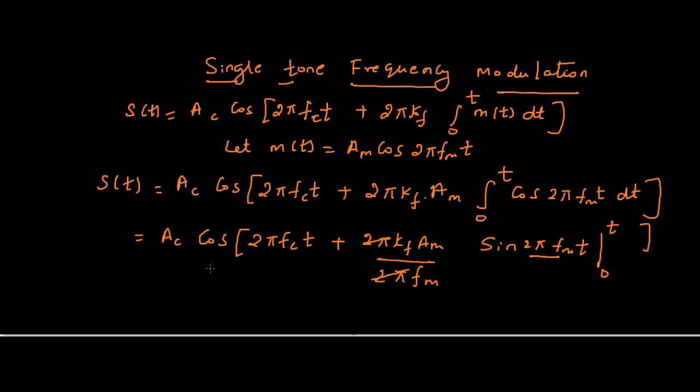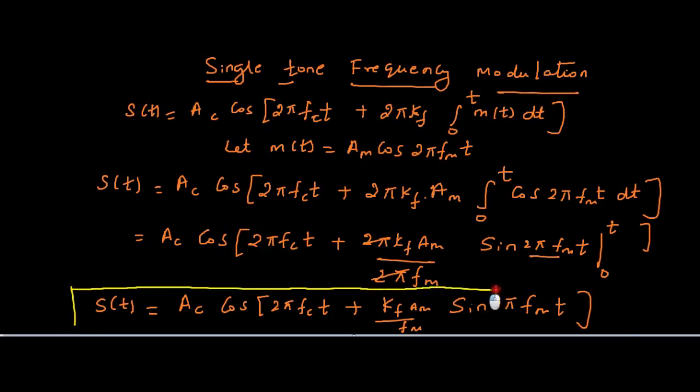For single tone modulation, the frequency modulated wave S(t) will look like this. This is our final equation for single tone frequency modulation. S(t) = Ac cos(2πfct + (kf·Am/fm)sin 2πfmt). This kf·Am/fm is called the modulation index.